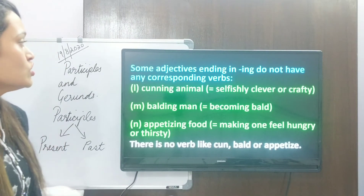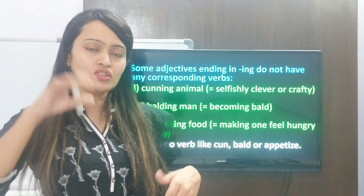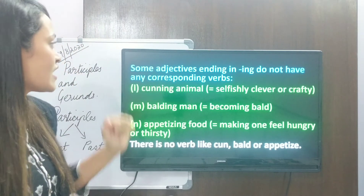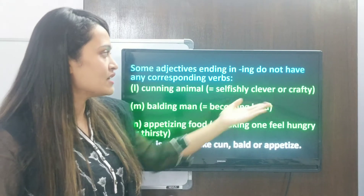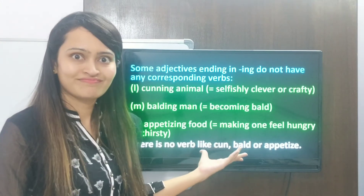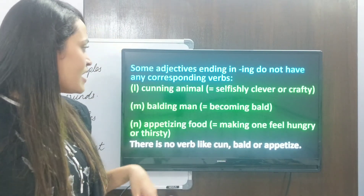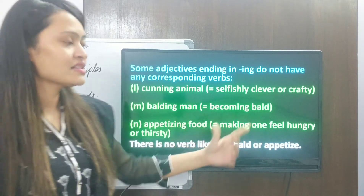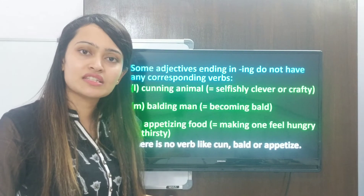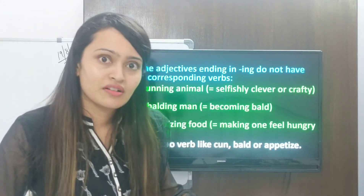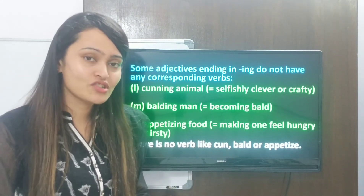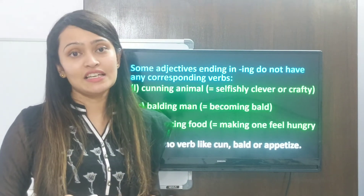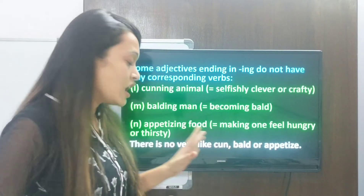Some adjectives ending in ing do not have any corresponding verb at all. For example, 'cunning animal' — cunning means selfishly clever or crafty, but there is no base verb 'cun' in the dictionary. Then 'balding man' means becoming bald, but there is no verb 'bald' as such. Then 'appetizing food' — 'appetize' is not a word either. So in these examples, sometimes there is no related verb at all. When there is no corresponding verb, we are dealing with exceptions of ing adjectives.